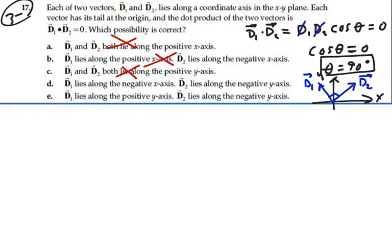d1 lies along the negative x-axis, d2 lies along the negative y-axis. So on d, we're looking at this. d1 is going this way, and d2 is going this way, along the negative y-axis. So they are perpendicular. That's going to work. That's a possibility.